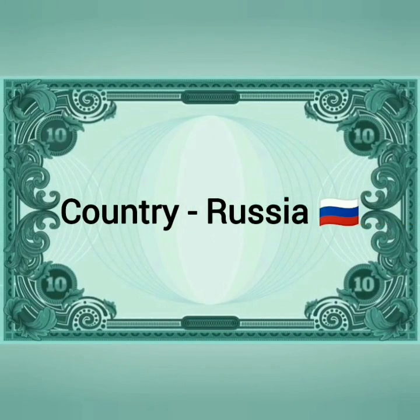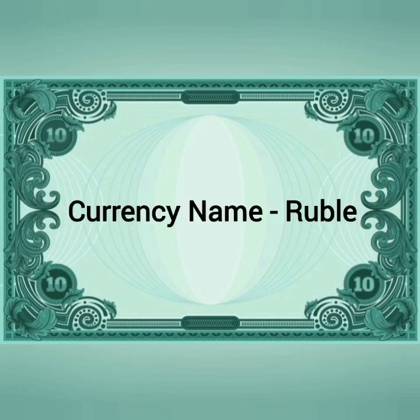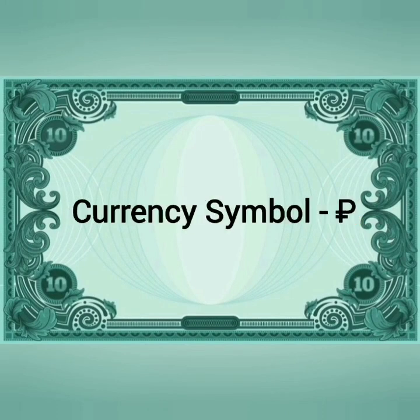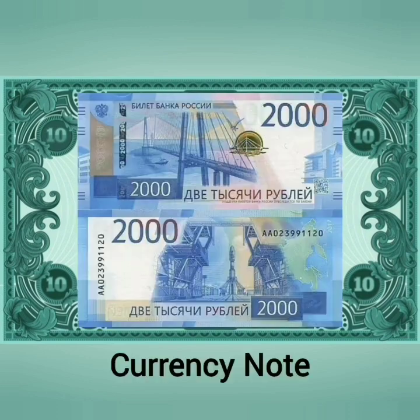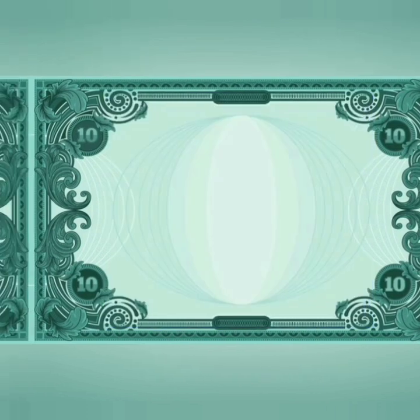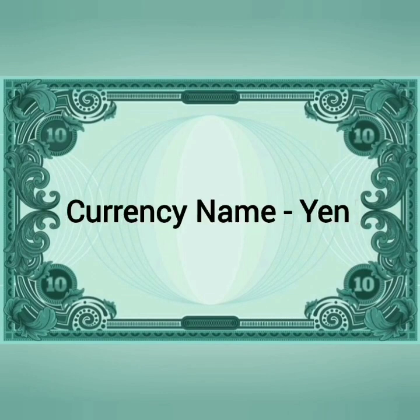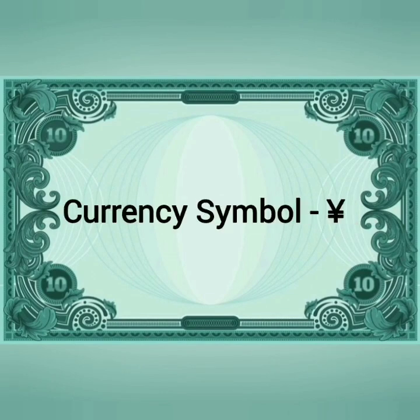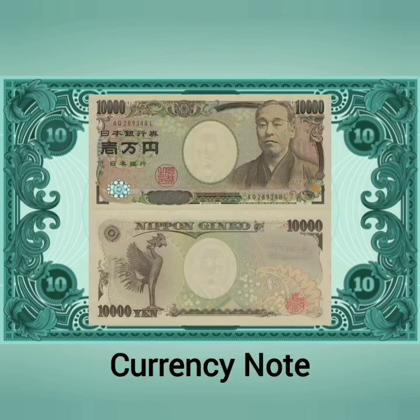Country: Russia. Currency name: Ruble. Currency code: RUB. Country: Japan. Currency name: Yen. Currency code: JPY.